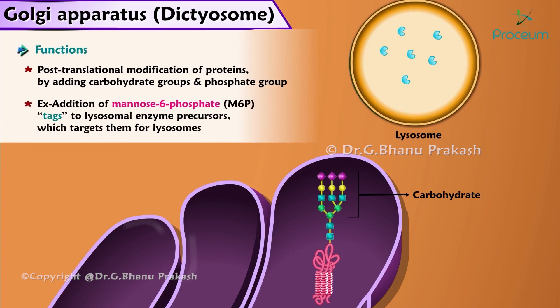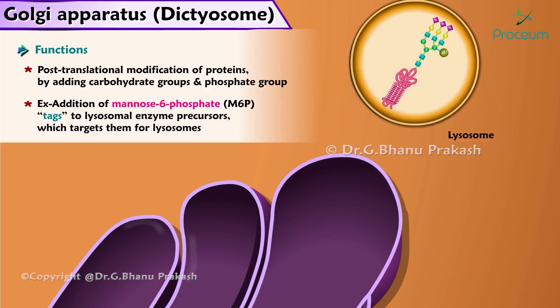And lastly, the Golgi apparatus is also responsible for the addition of mannose-6-phosphate, or M6P tags, to lysosomal enzyme precursors, which targets them for lysosomes.